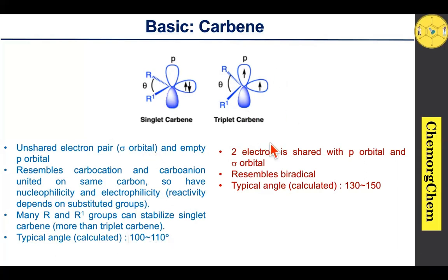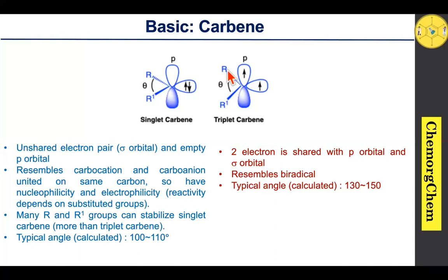When you come to the triplet carbene, the two electrons are shared in the p orbital as well as the sp2 hybrid orbital. Apart from this form, one more form is also possible — the linear form. In that linear form, one of the electrons is present in the sp hybrid orbital. Triplet carbenes look like a biradical, and the typical angle between R and R1 in this particular form is 130 to 150 degrees.